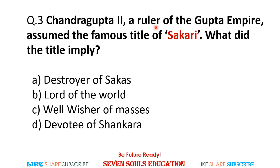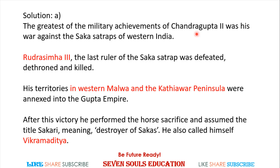Chandragupta II, a ruler of the Gupta Empire, assumed the famous title of 'Sakari.' What did the title imply? Options: destroyer of Sakas, lord of the world, well-wisher of masses, or devotee of Sankara. The answer is 'destroyer of Sakas.' Chandragupta II's greatest military achievement was the destruction of the Saka dynasty.